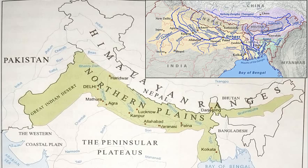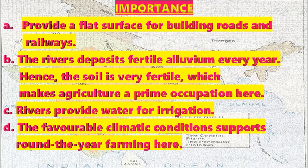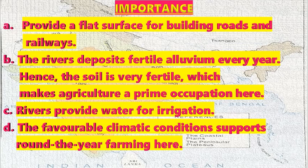The Northern Plains have many advantages. They provide a flat surface suitable for building roads and railways. Rivers deposit fertile alluvium every year, making agriculture the prime occupation. Rivers also provide water for irrigation, and the favorable climate supports year-round farming.